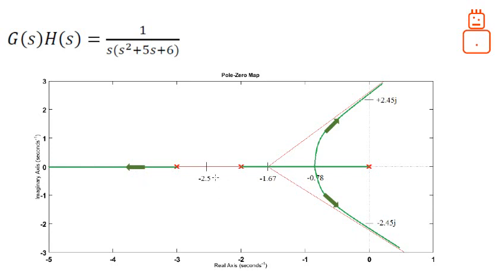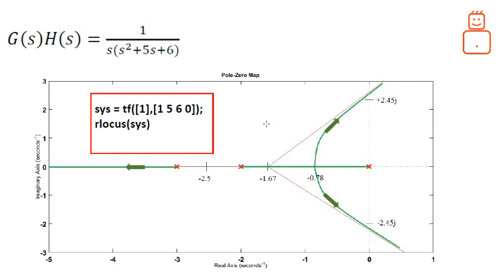One important point: the root locus must be symmetric about the real axis. Two key rules to remember — branches always originate from poles and end at zeros (finite or at infinity), and the final drawing must be symmetric about the real axis since k varies from 0 to infinity. You can also use this simple MATLAB code to draw the locus automatically. See you in another video.